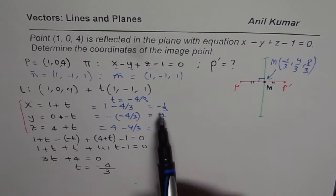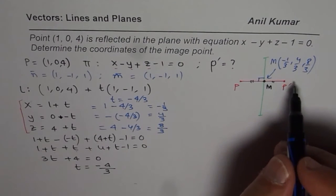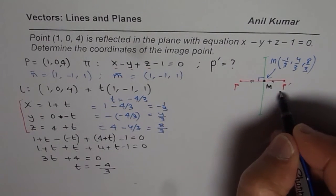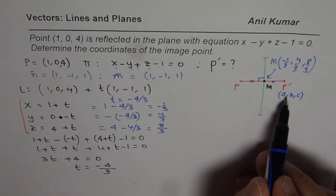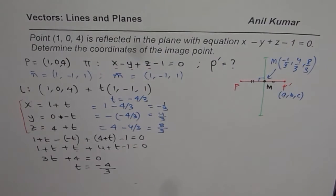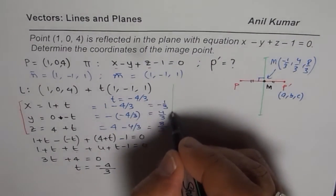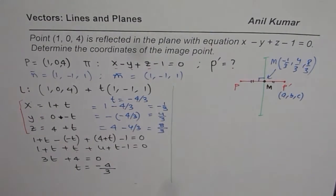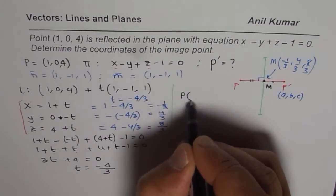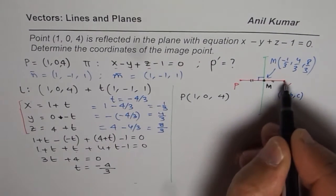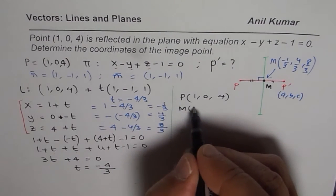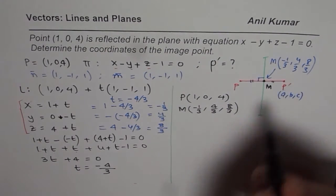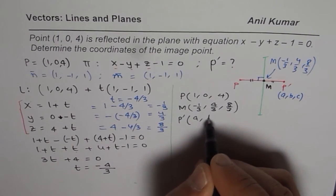Now the question is: from these points, how do we find P-dash, the mirror image? We need to determine the coordinates of the image point. Let the coordinates of P-dash be (A, B, C). We know P is (1, 0, 4) and M is (−1/3, 4/3, 8/3). Since M is the midpoint of P and P-dash, we can find A, B, C using the midpoint formula — the average of the two endpoints equals the midpoint.